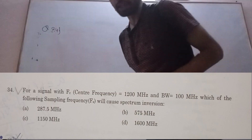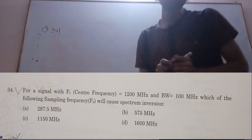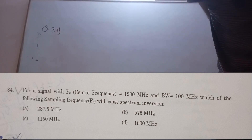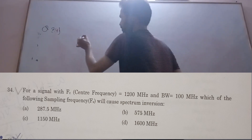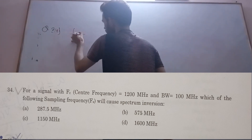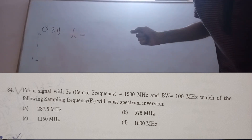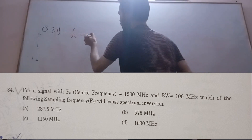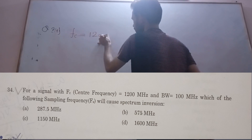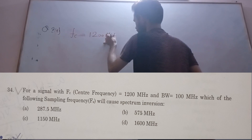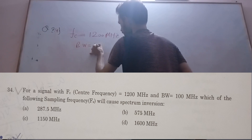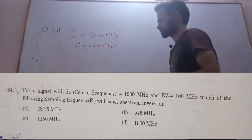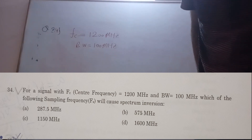Let us see question number 34. A signal is given with center frequency 1200 megahertz and bandwidth 100 megahertz. The question is asking about which of the following sampling frequencies causes spectral inversion.